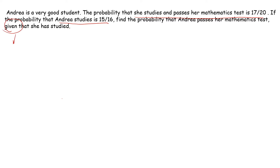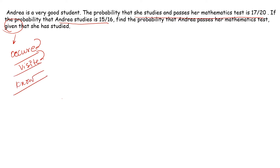Remember the key words that indicate conditional probability: 'given that', 'occurred', 'visited', 'know' or 'knew', 'seen'. Such kinds of words show that you have to apply the conditional probability formula.